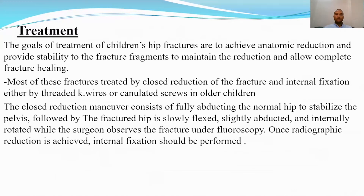The closed reduction maneuver consists of: first, full abduction of the normal hip to stabilize the pelvis, followed by slowly flexing the fractured hip with slight abduction and internal rotation, while the surgeon observes the fracture under fluoroscopy. Once radiographic reduction is achieved, internal fixation should be performed.